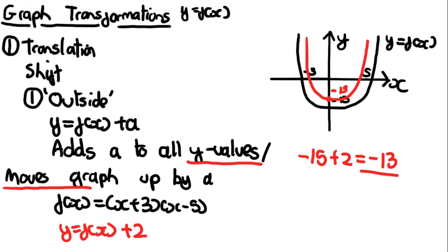One thing you'll notice is that the roots have also changed. I used to think they'd stay the same since we're only affecting y. But as you can see on the graph, if we move everything up by 2, what were previously the roots are now at the y = 2 position. The new roots are where y was equal to −2 before. The only way to find these new roots is to solve from scratch by making y = 0.